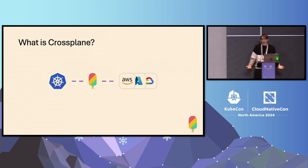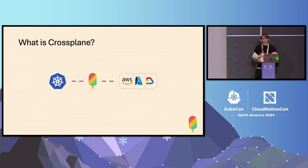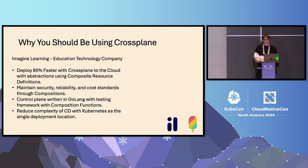So you may be asking, what is Crossplane? Crossplane is a control plane framework that is highly sensible and allows you to build platforms based on Kubernetes and talk to various different cloud providers, source control management tools, observability tools, and build a control plane around that using this framework.